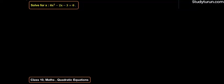Hello students, today we will be solving a problem of class 10 maths from the chapter quadratic equations. The question states: solve for x, and the given quadratic equation is 8x² - 2x - 3 = 0.